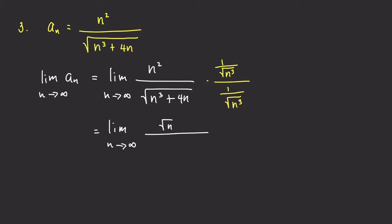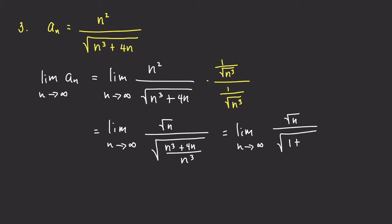Writing the denominator in terms of a single radical gives the square root of n cubed plus 4n all over n cubed, which simplifies to the square root of 1 plus 4 over n squared. So we have the limit as n goes to infinity of square root of n, all over square root of 1 plus 4 over n squared. The numerator goes to infinity and the denominator goes to 1, so the limit equals infinity. Therefore, the sequence a sub n is divergent.